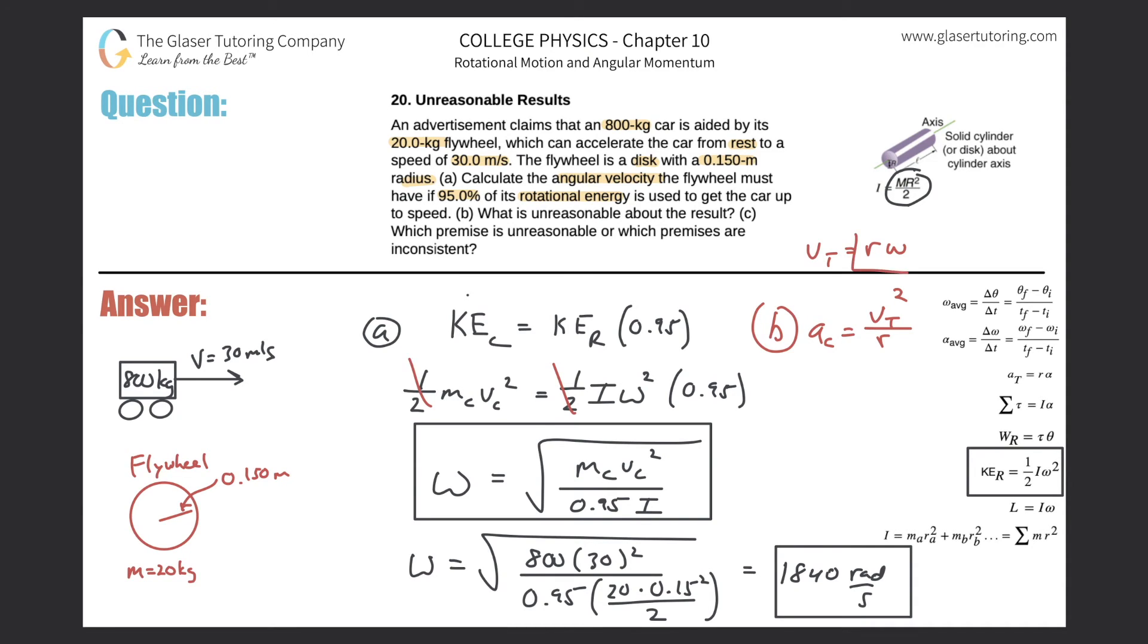If we wanted to do that, centripetal acceleration is equal to tangential velocity squared all divided by r. Also remember that tangential velocity is equal to r omega. We can plug this in, so centripetal acceleration is equal to r omega squared all divided by r - obviously we have a common r, so it's just r omega squared. Now plug in your values: 0.15 multiply by 1840 squared. Centripetal acceleration becomes about 500,000 meters per second squared. In terms of g, if you divide by 9.8, you're looking at about 50,000 g's. I mean that's insane. This is way too great.